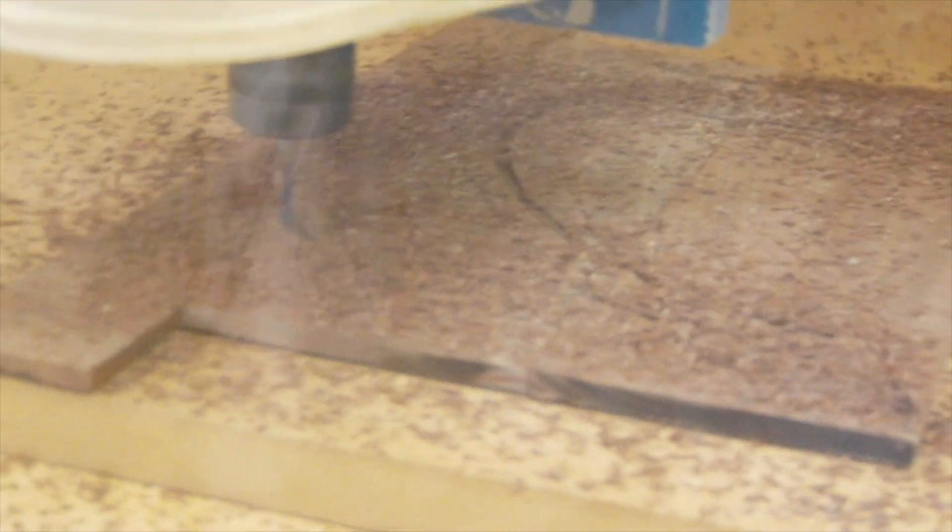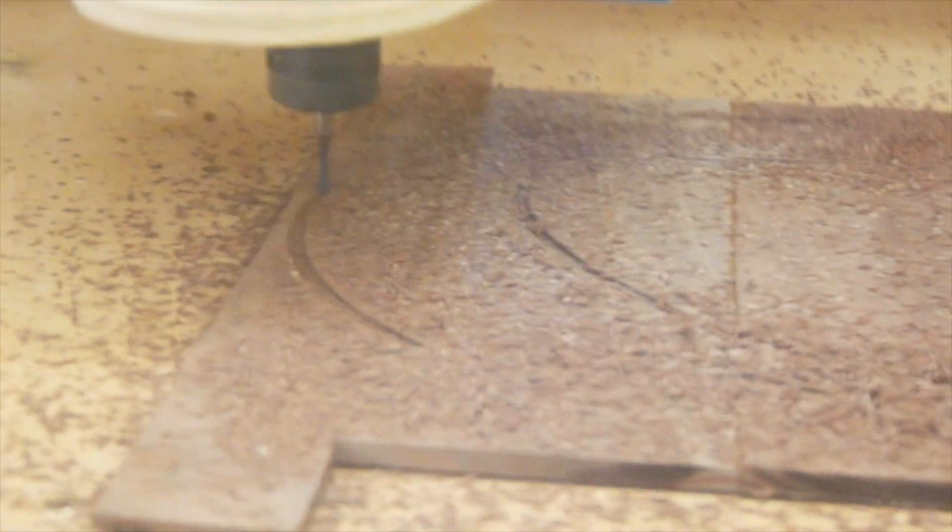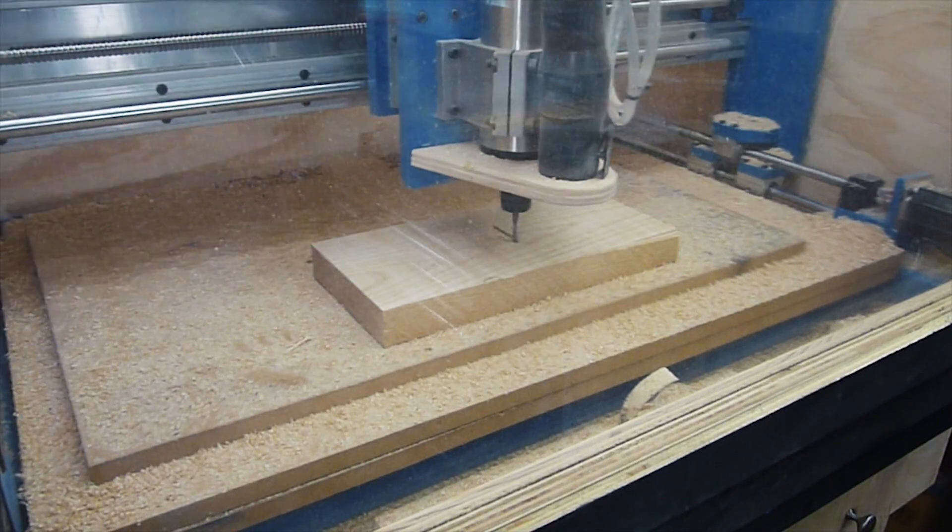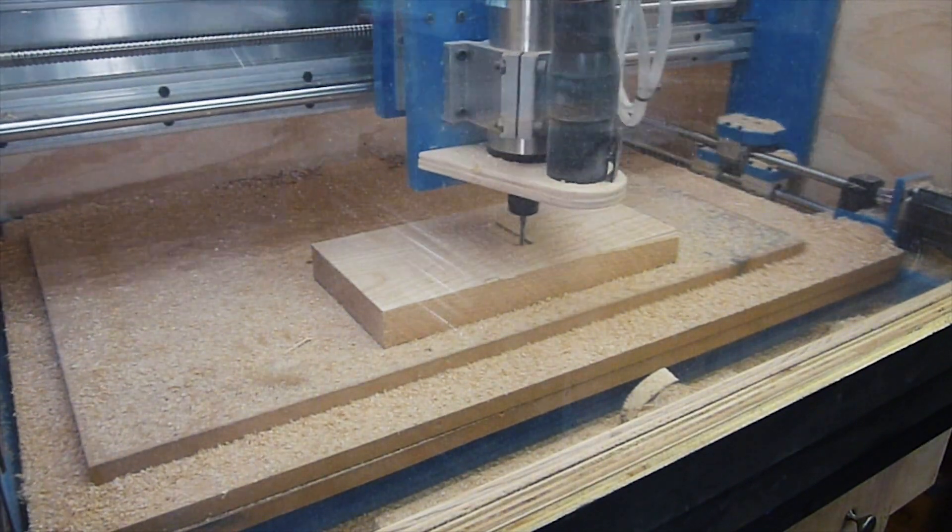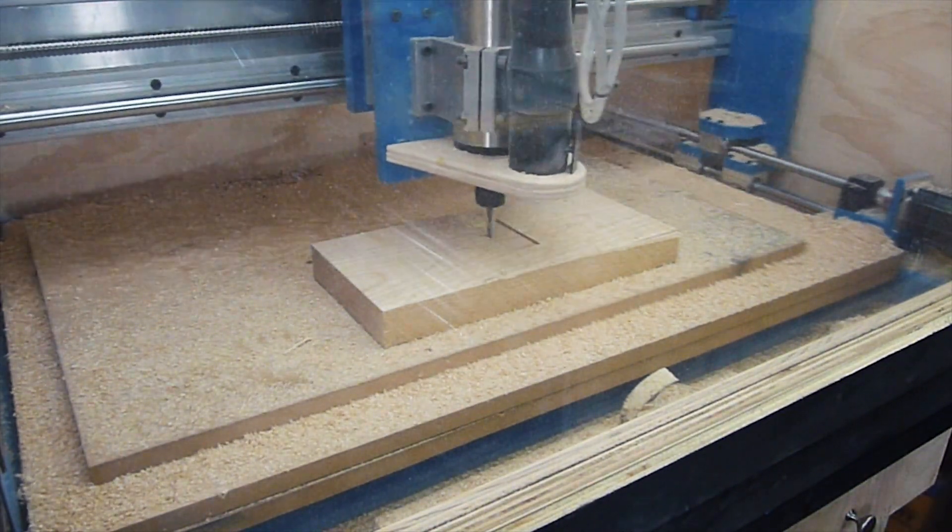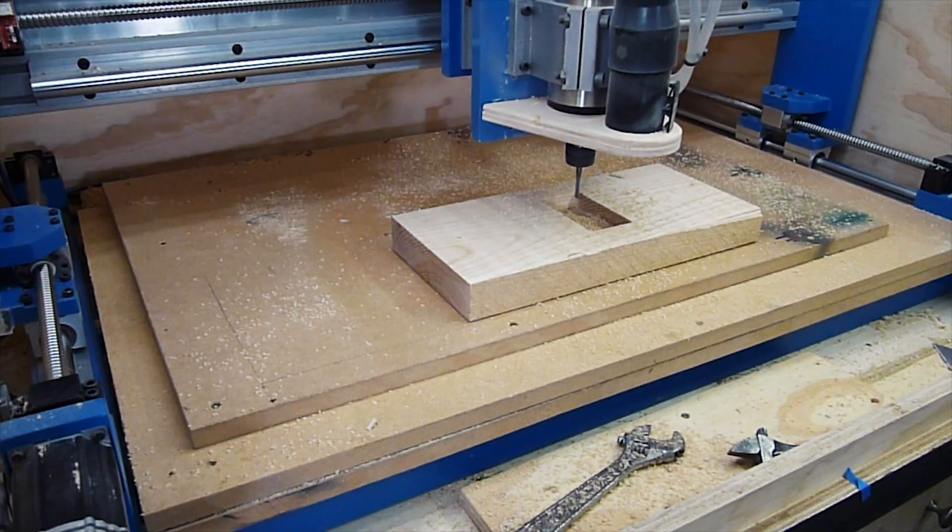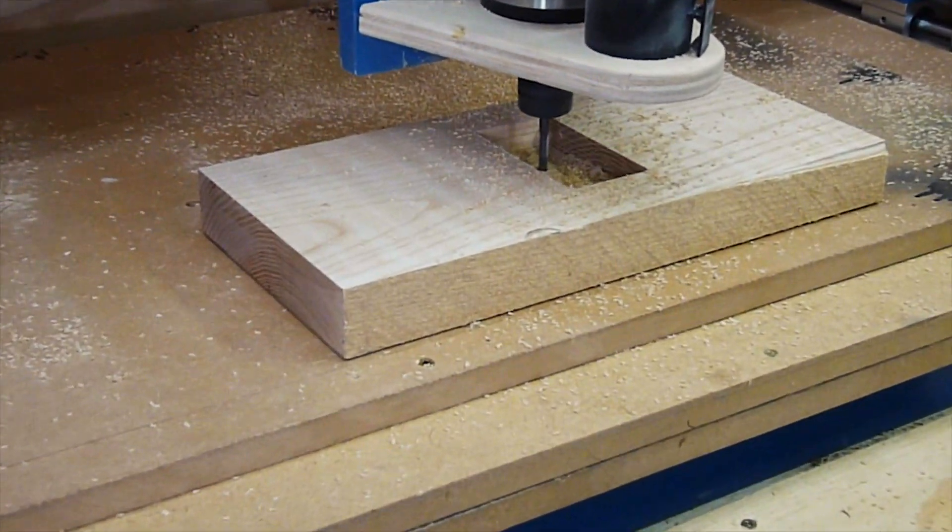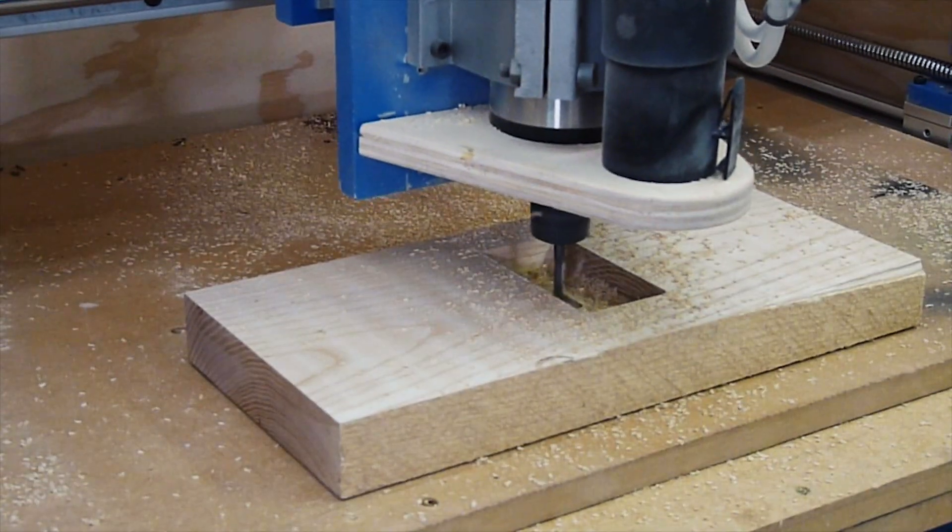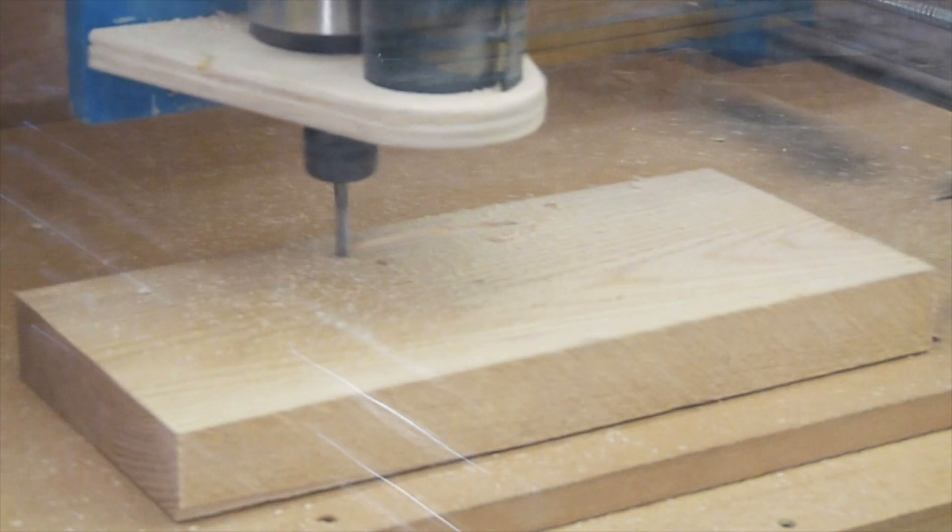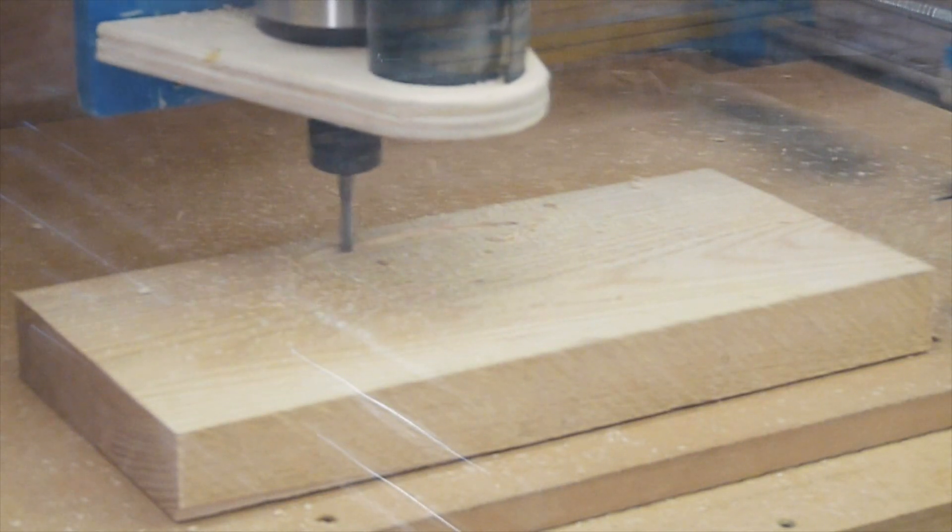And now we're cutting out both sides and they are an exact copy of the plexiglass piece. And this is the underside of the base. That's where the electronics are going to go.